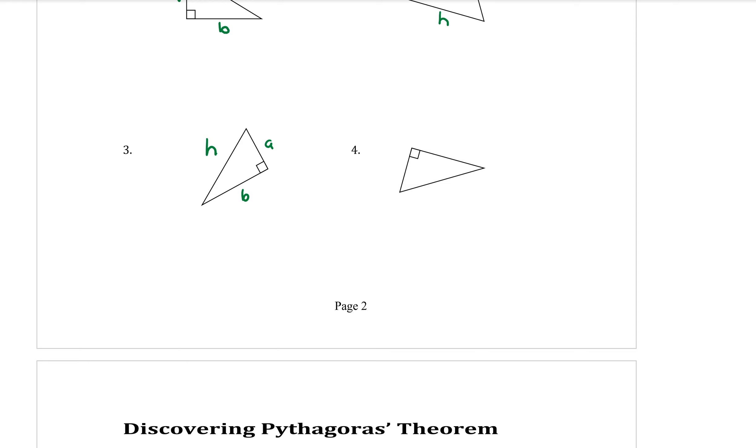And one more, the right angle is here. A and b are the arms. And the hypotenuse is straight across from the right angle.